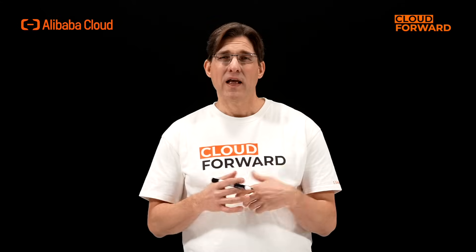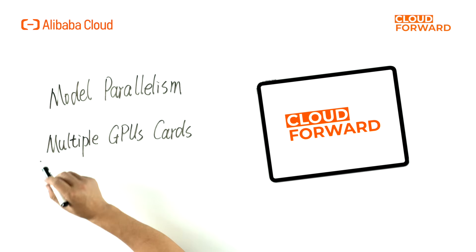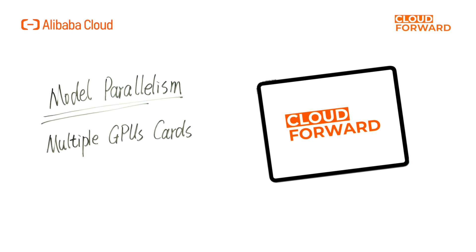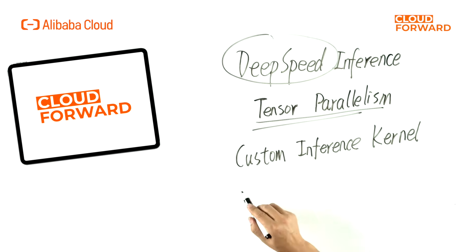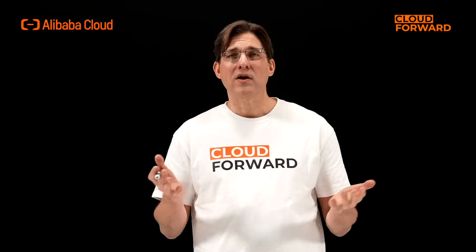With the release of more and more large language models, including many outstanding open-source ones, people can now experience these models and build their own applications. However, unlike previous models, the memory of a single GPU card may be insufficient to support large language models. Therefore, model parallelism is needed to split large language models and perform inference on multiple GPU cards. DeepSpeed inference provides model parallelism capabilities, allowing foundation models to be parallelly inferred on multiple GPUs using tensor parallelism technology to improve inference performance. Additionally, DeepSpeed offers high-performance custom inference kernels to enhance GPU resource utilization and reduce inference latency. Hence, we can deploy a distributed inference service for large language models using DeepSpeed inference.